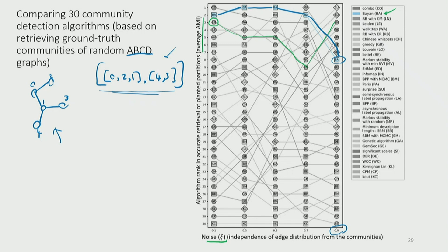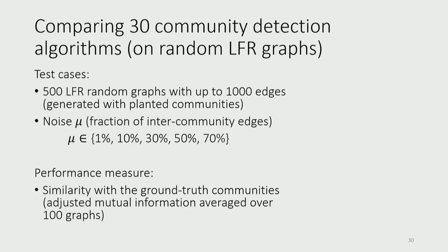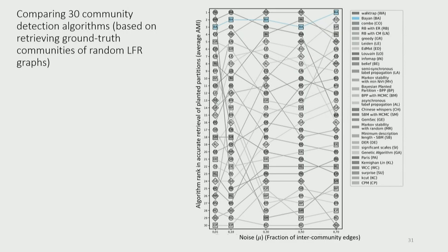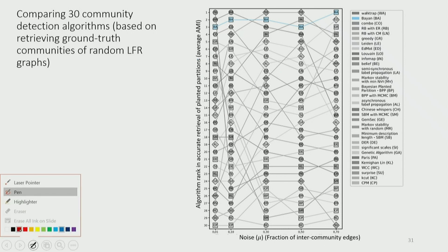Of course, there could be a conflict of interest concern — people might say that the ABCD test cases are from Ryerson University, the same city. So I also use another benchmark model from Indiana University called LFR benchmarks. This allows us to generate random benchmarks with different amounts of noise and compare algorithms separately. If an algorithm performs well on both, it's likely a good algorithm — though whether an algorithm is truly good is still controversial.